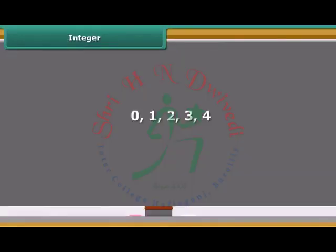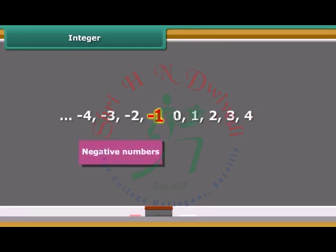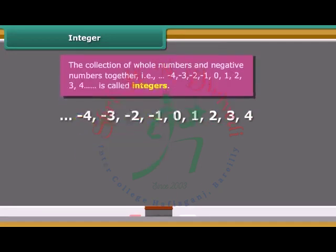Hello students, you already know about natural numbers and whole numbers. If we put negative numbers and whole numbers together, the collection of numbers is known as integers.